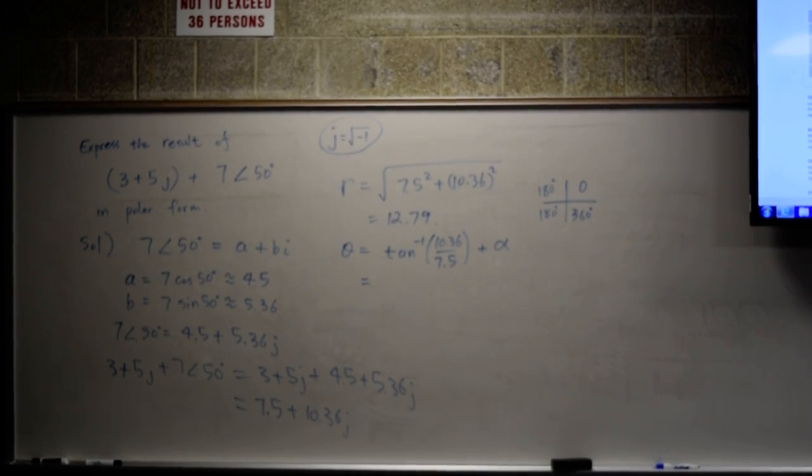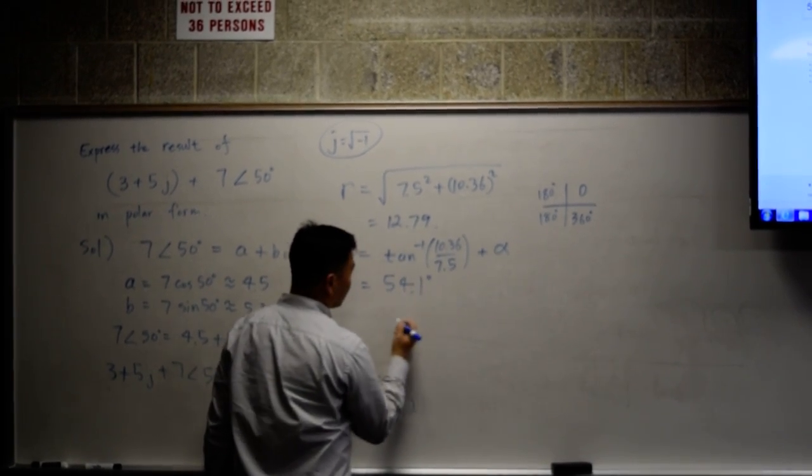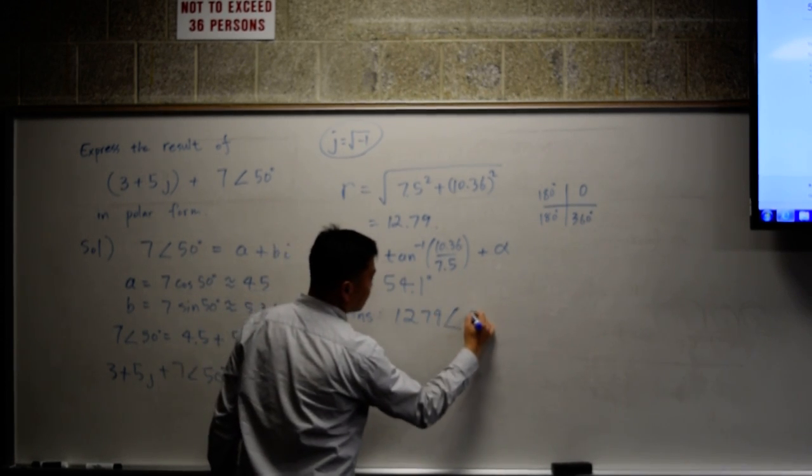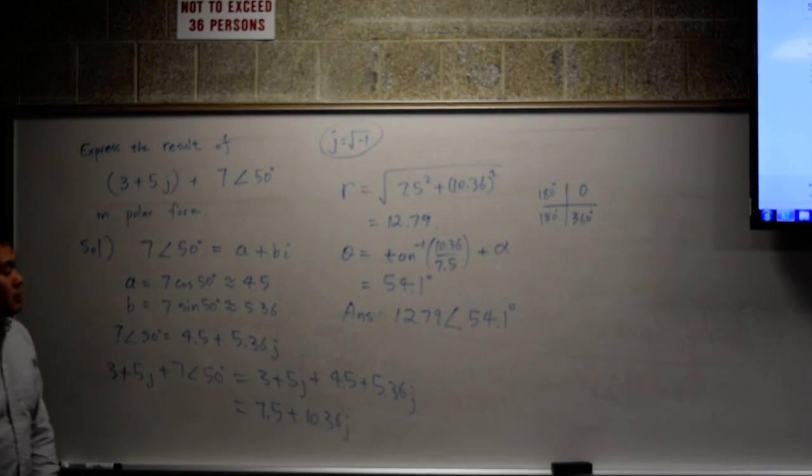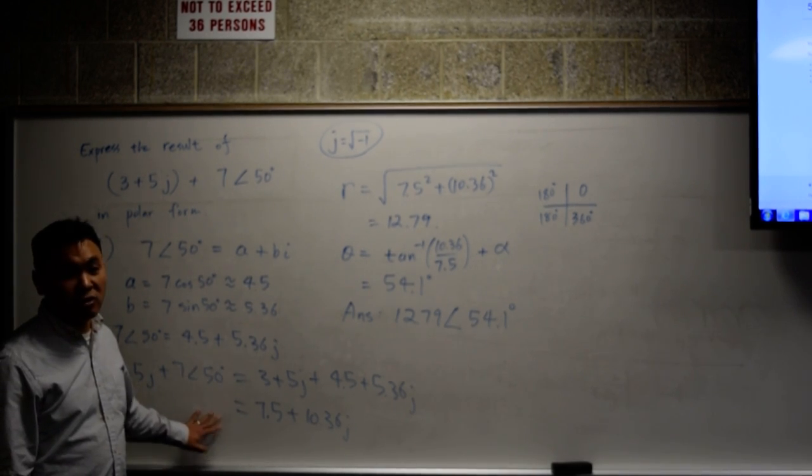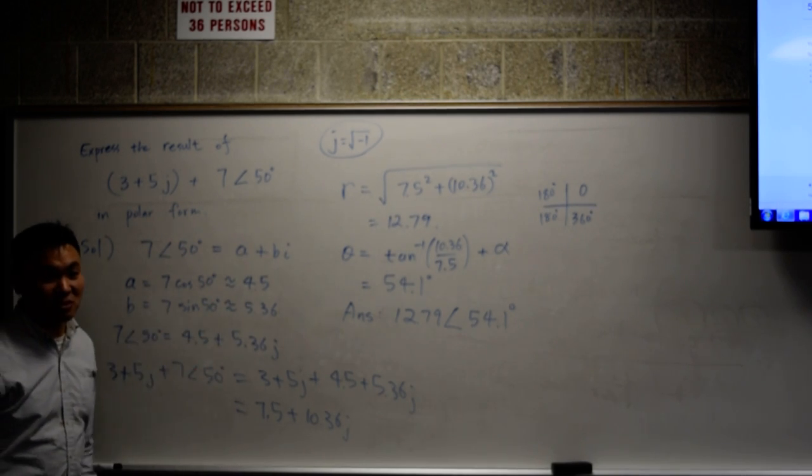We need arc tan of 10.36 divided by 7.5 in degrees. So the answer is, finally, 12.79 angle 54.1 degrees. In the engineering 290 course, they had a quiz like this one. You may be asked this type of question in engineering 290.